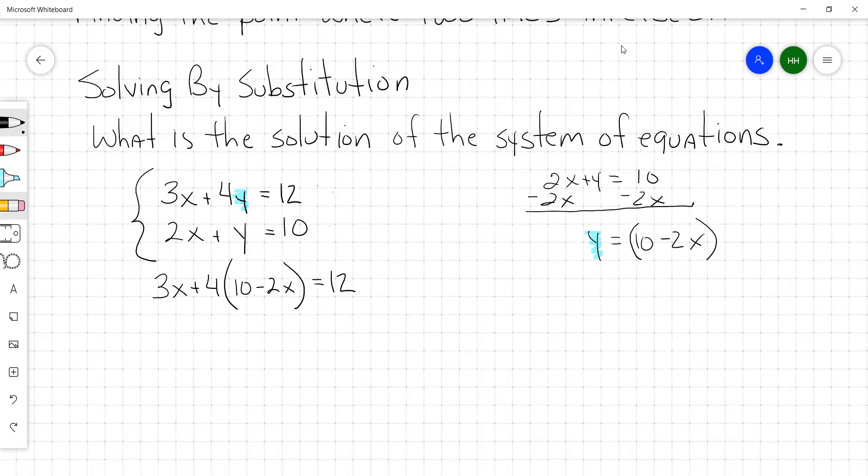We're going to do the distributive property. We get 3x plus 40 minus 8x equals 12. That was the 4 times 10, the 4 times the negative 2x.